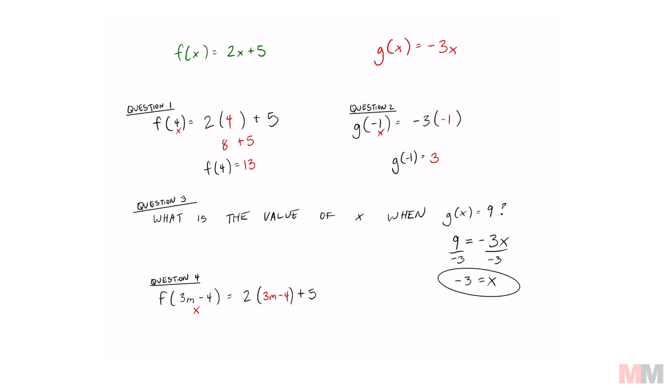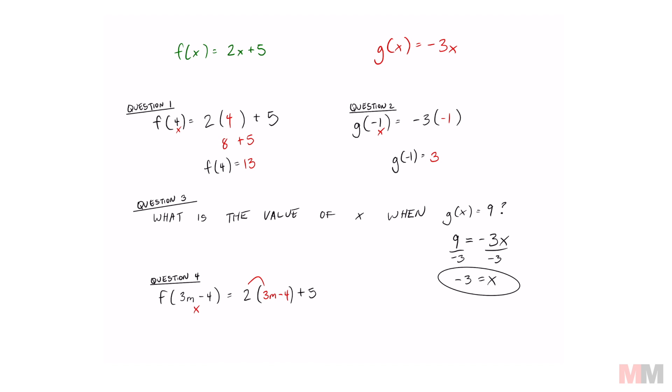All we got to do is simplify from here, distribute this, and we get 6m minus 8 plus 5. And then combine like terms. 6m minus 3 is equal to whatever f of 3m minus 4 is.